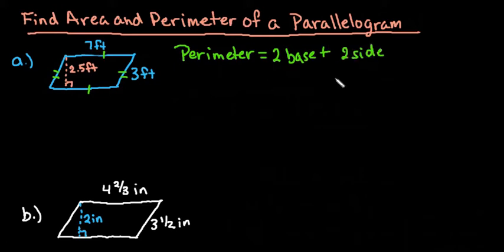There are different formulas - you can simply just add, or you can do 2 times your base plus 2 times your side. For this one we would say that the perimeter equals 2 times 7 plus 2 times 3. The perimeter is the outside distance. When you simplify this we would have 14 plus 6 which gives us 20 feet.